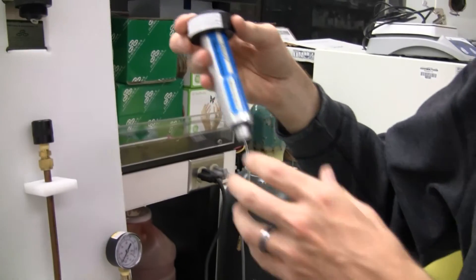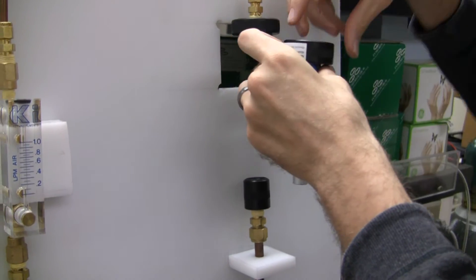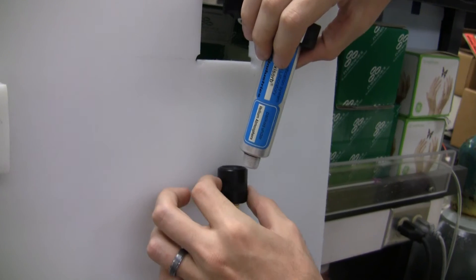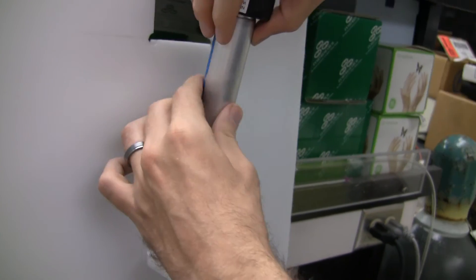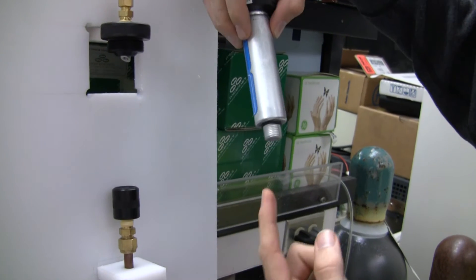What you're going to want to do is take this and screw this down onto this nut. Screw it down there and then you'll have a needle inside which will puncture the aluminum.